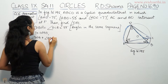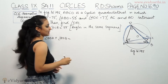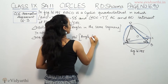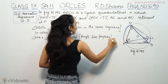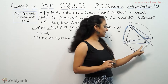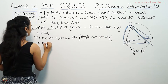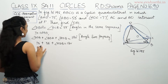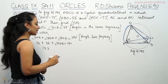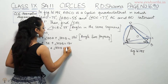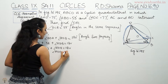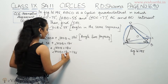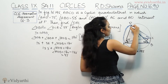In triangle ABD, angle DAB plus angle DBA plus angle ADB is equal to 180 degrees, by the angle sum property. So DAB is 75, DBA is 58, plus angle ADB equals 180 degrees. So 75 plus 58 equals 133 degrees, and angle ADB equals 180 minus 133, which gives us angle ADB equal to 47 degrees.